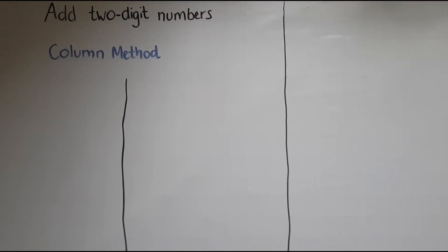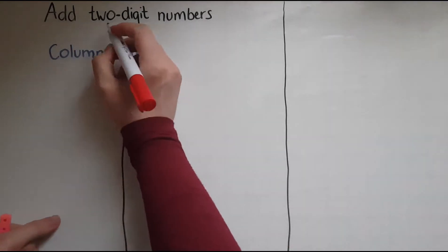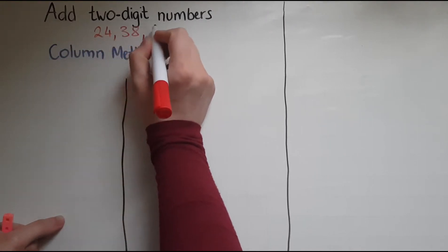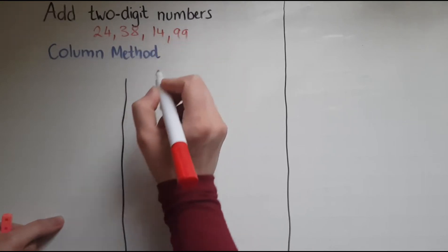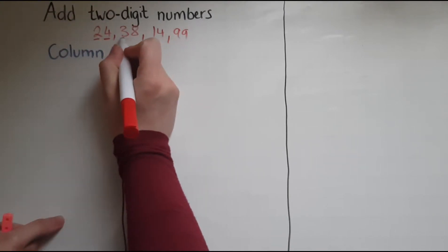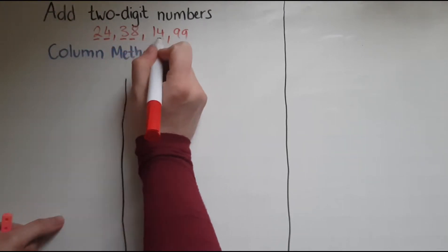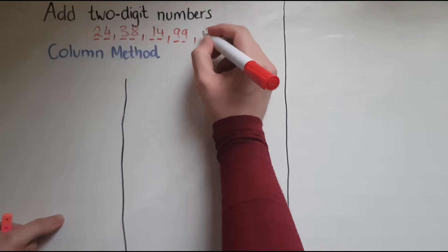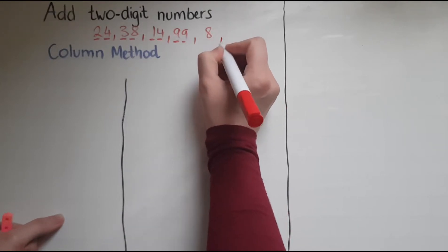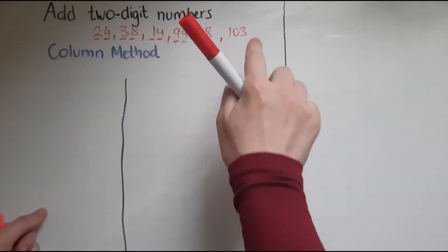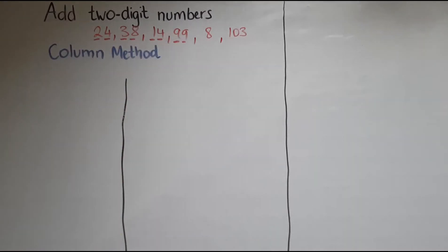when it comes to adding different items together. Two-digit numbers are numbers like 24, 38, 14, 99 because they have two digits. So 24 has a 2 and 4, two digits. 38 is 3 and 8, 14 is 1 and 4, 99 is 9 and 9. Whereas 8 is a one-digit number because it has just one digit. 103 is a three-digit number, so we'll focus on these ones, the two-digit numbers.